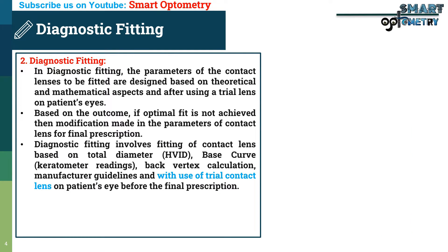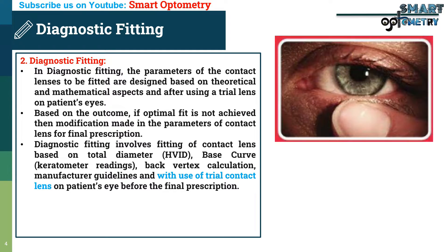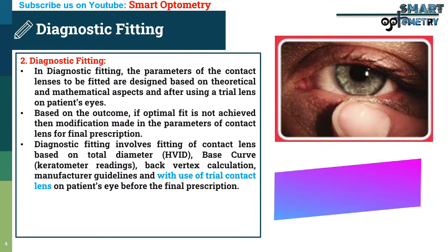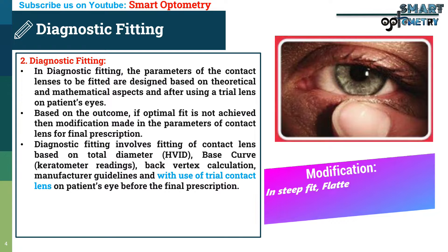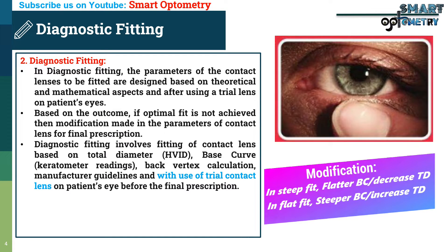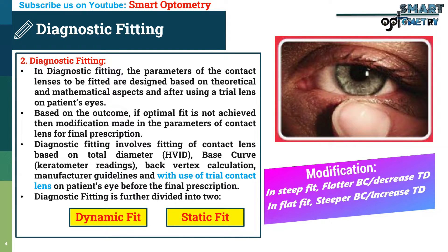Then he puts the trial contact lens in the patient's eyes and assesses the fitting. If the fit is optimal, then he orders the final lens. If the fit is steep or flat, then he makes some modification in the empirical data to get the optimal fit. After achieving the optimal fit, he orders the final lens. Diagnostic fitting is further divided into two types: dynamic fitting and static fitting. In the upcoming slide, we will describe details about dynamic and static fit.